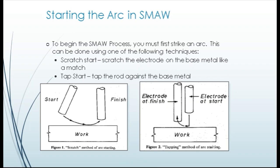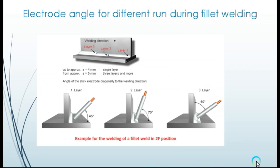Here we will learn how to start the arc in SMAW. To begin, you must first strike an arc. This can be done using one of two techniques: Scratch start — scratch the electrode on the base metal like a match; or Tap start — tap the rod against the base metal. Electrode angles are also shown for single-run weld and multi-run weld using the shielded metal arc welding process.